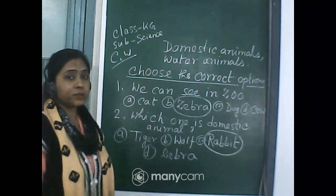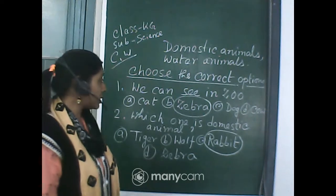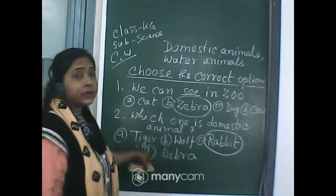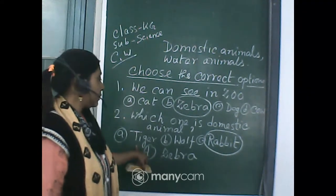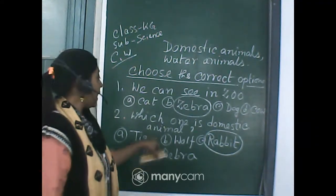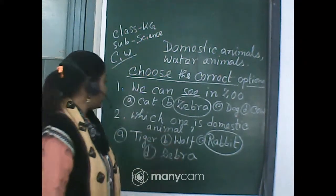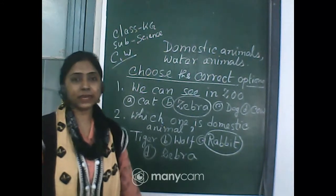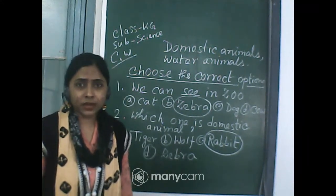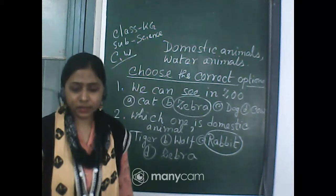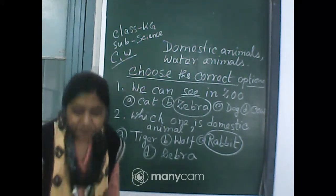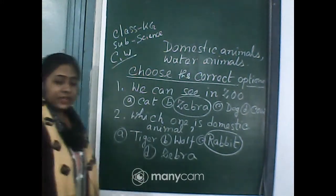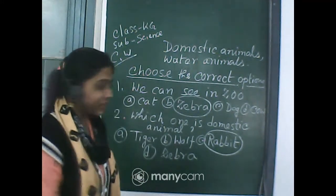The other options are not animals we see around us. Tiger — nobody would want to see a tiger near their home! And wolf and zebra are also not domestic animals found around us.